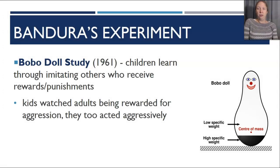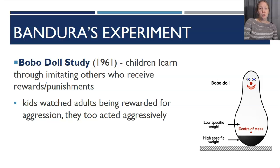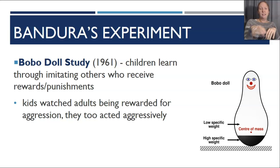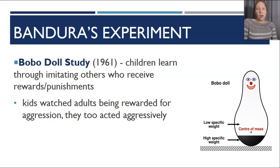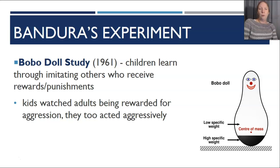Bandura formed this theory through his Bobo doll experiment, conducted in 1961. Kids watched adults beat up a Bobo doll — a boxing-style doll with sand in the bottom that bounces back up. The adults were rewarded for acting aggressively toward the doll. When the kids got their turn, they too acted aggressively, sometimes taking it even further than the adults, possibly hoping to get rewarded even more.